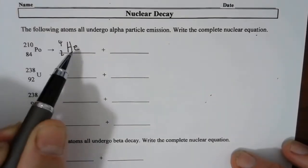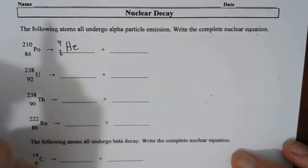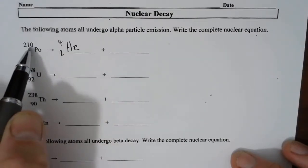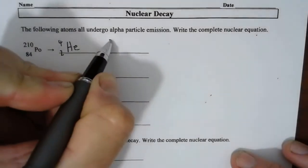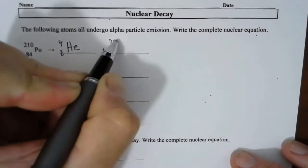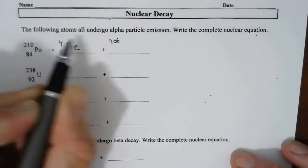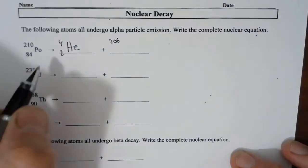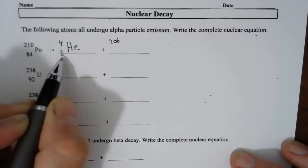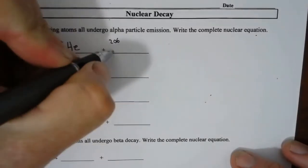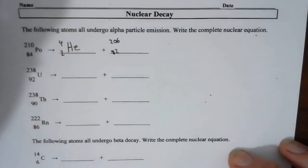So this is one of the products. I recall that what happens to the mass number is that it decreases by four. So that's 206: 210 take 4 is 206. And the atomic number decreases by two, so that means 84 minus 2 is 82. So this is where we need to get our periodic table.